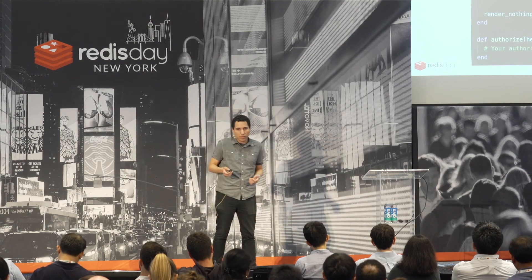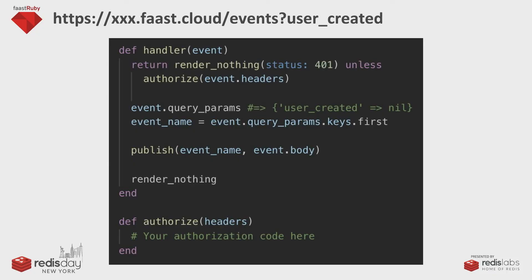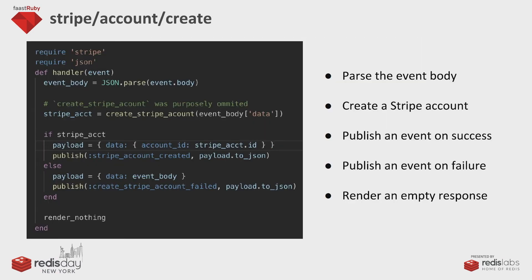'Render nothing' means just a blank body response with 200 as default. When the Stripe account create function picks it up, you just require the Stripe gem, get the data from the body, and parse it since it comes in JSON format. Then, if the Stripe account was created, you publish another event saying the Stripe account was created so other functions can do other things based on that. Or if it didn't work, you publish an event saying the Stripe account failed.